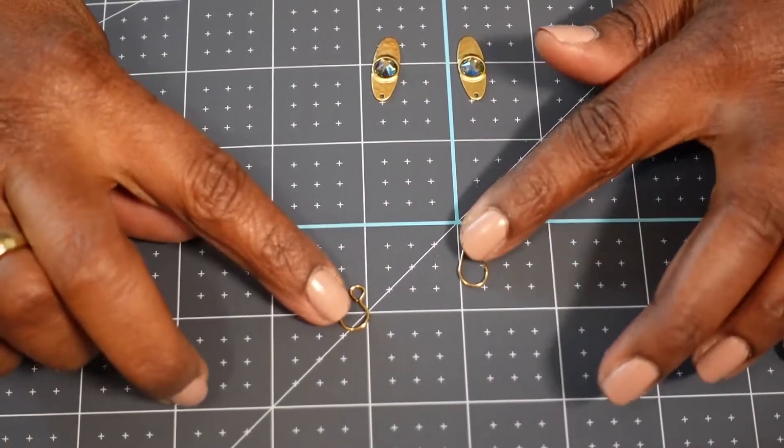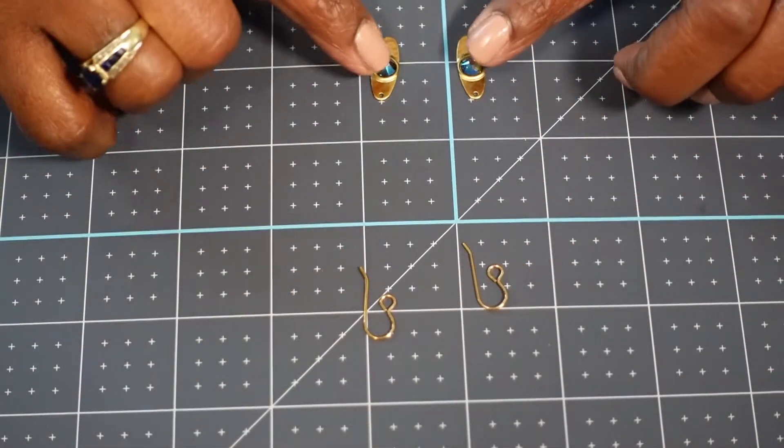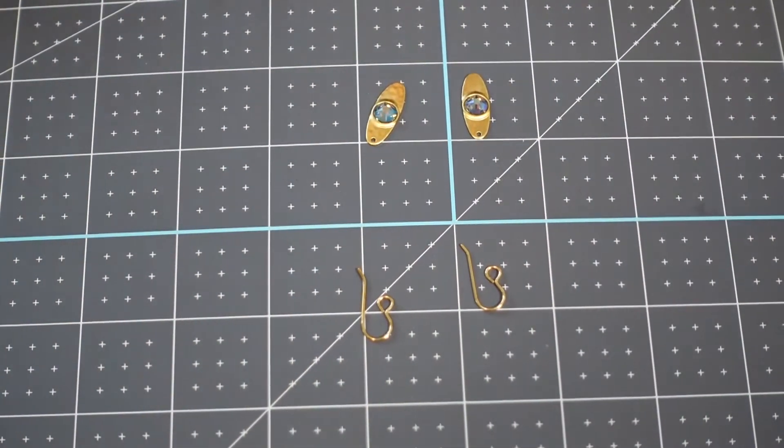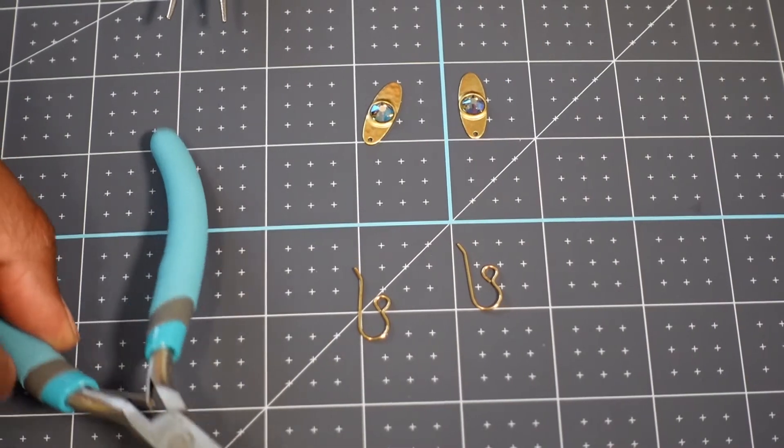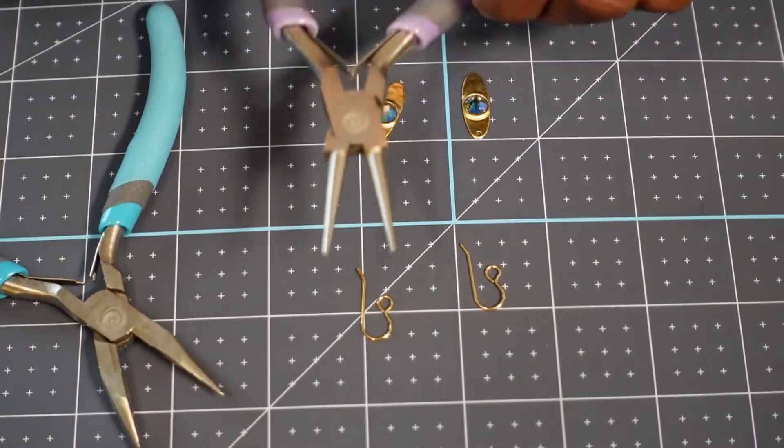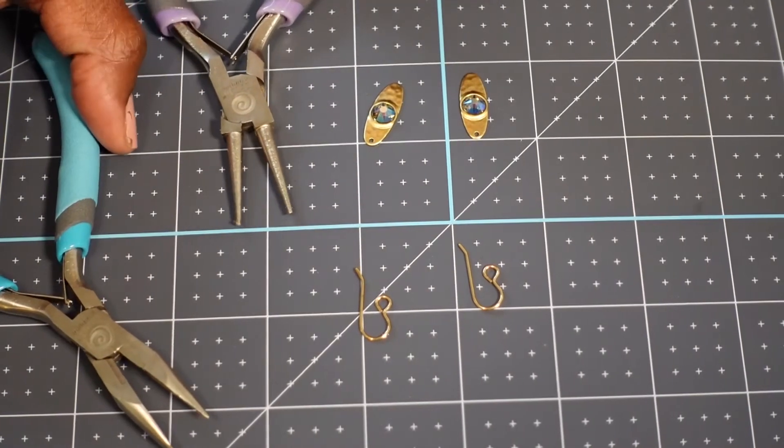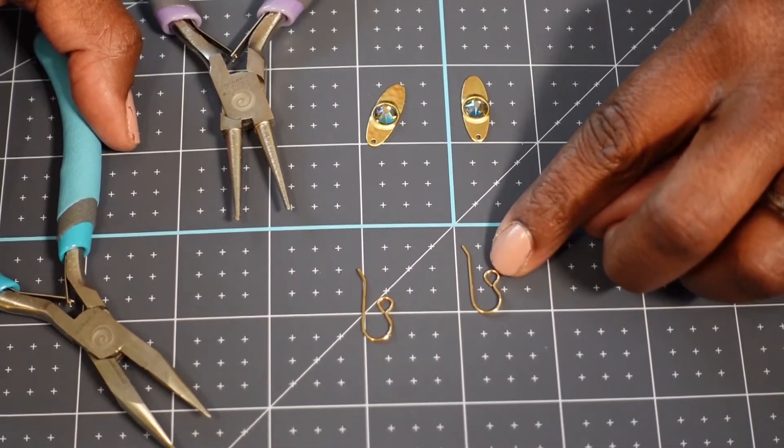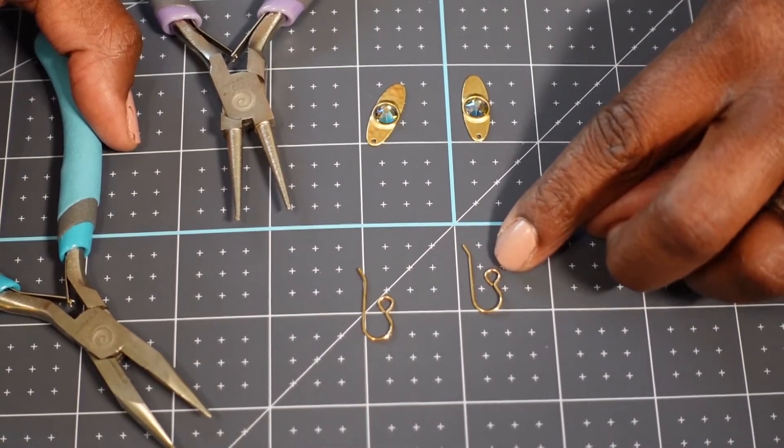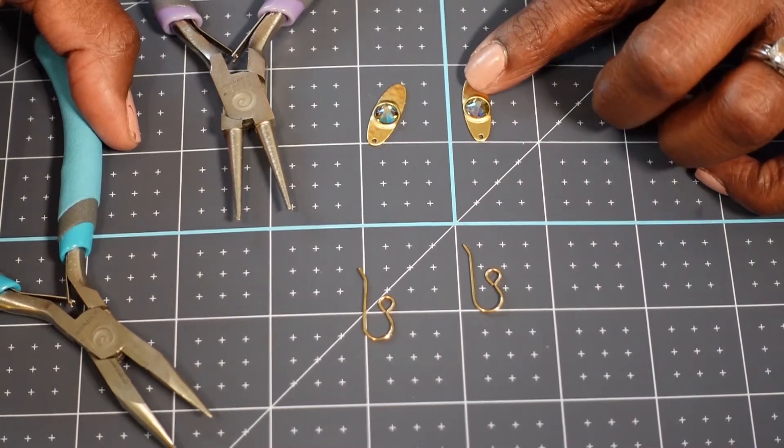All right, so now we have our two ear wires, we have our two pendants, and we also have our flat nose pliers and our round nose pliers. So the first thing that we're going to do is we're going to open up this little loop on the ear wire so that we're able to thread on the pendant.